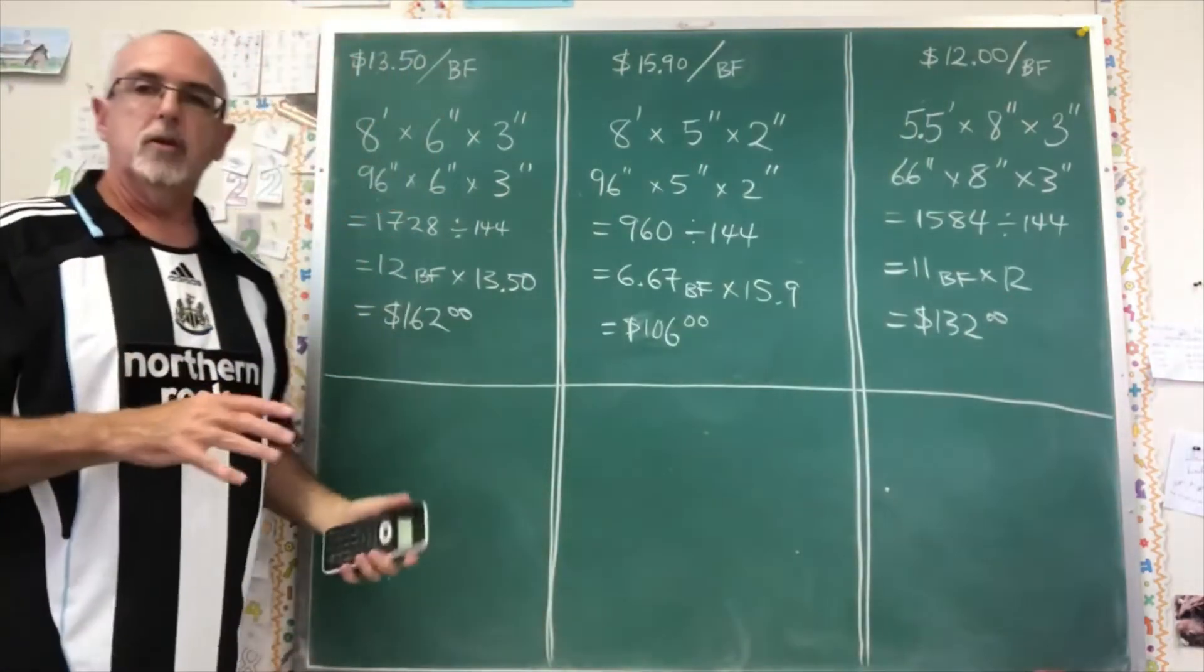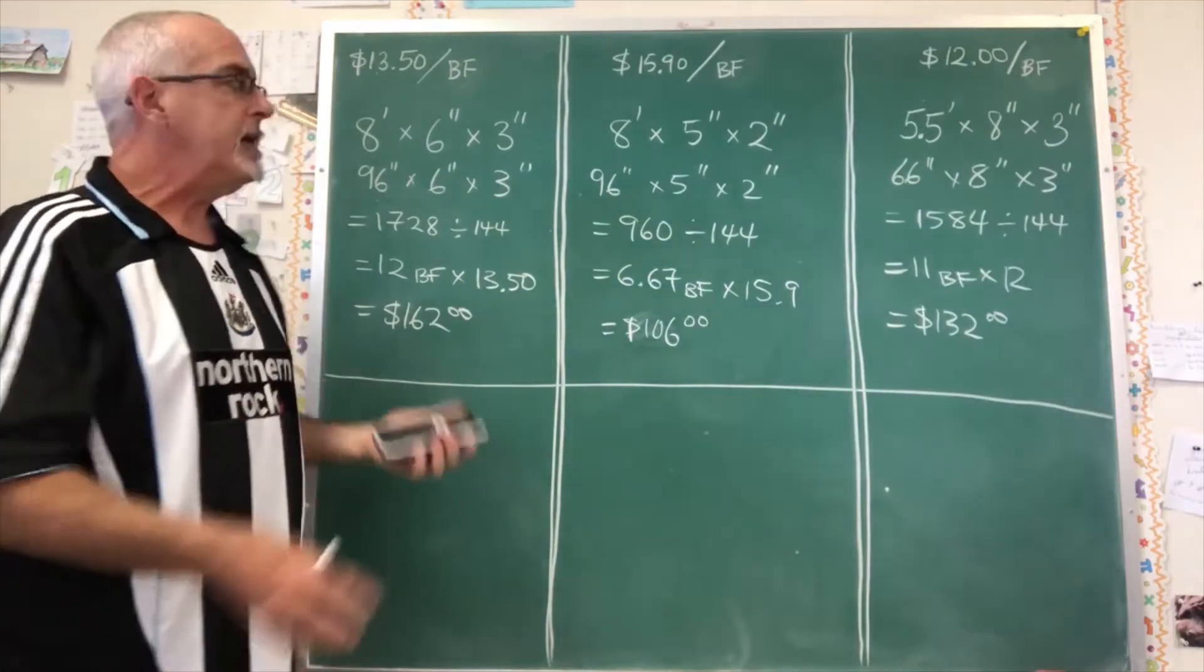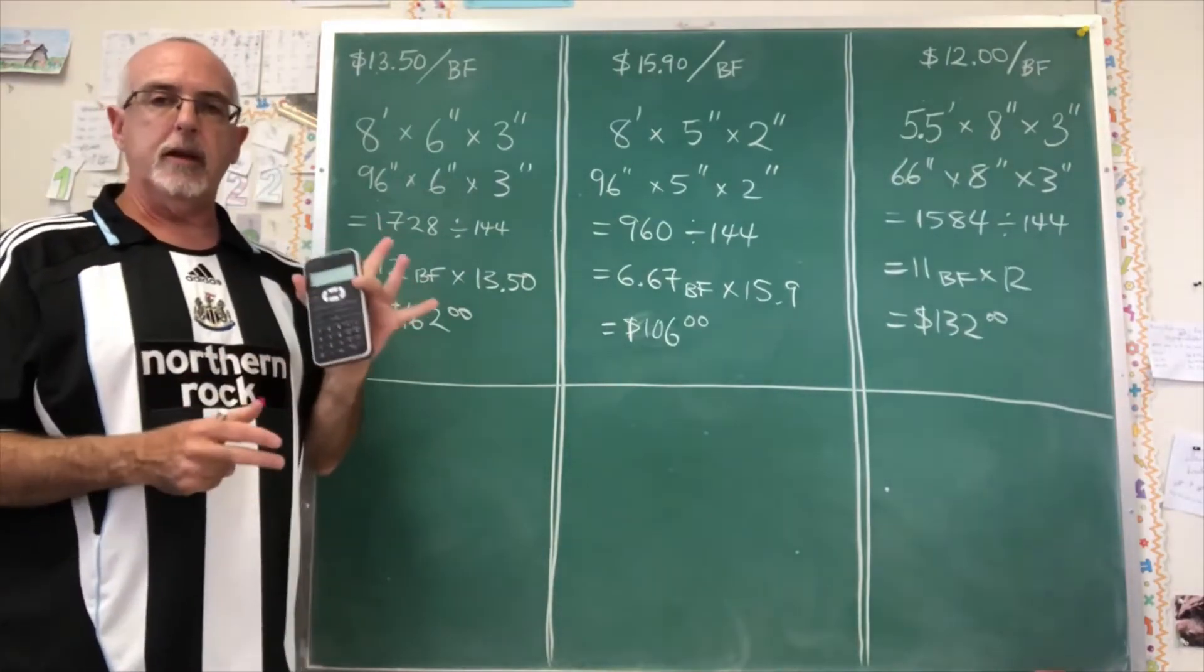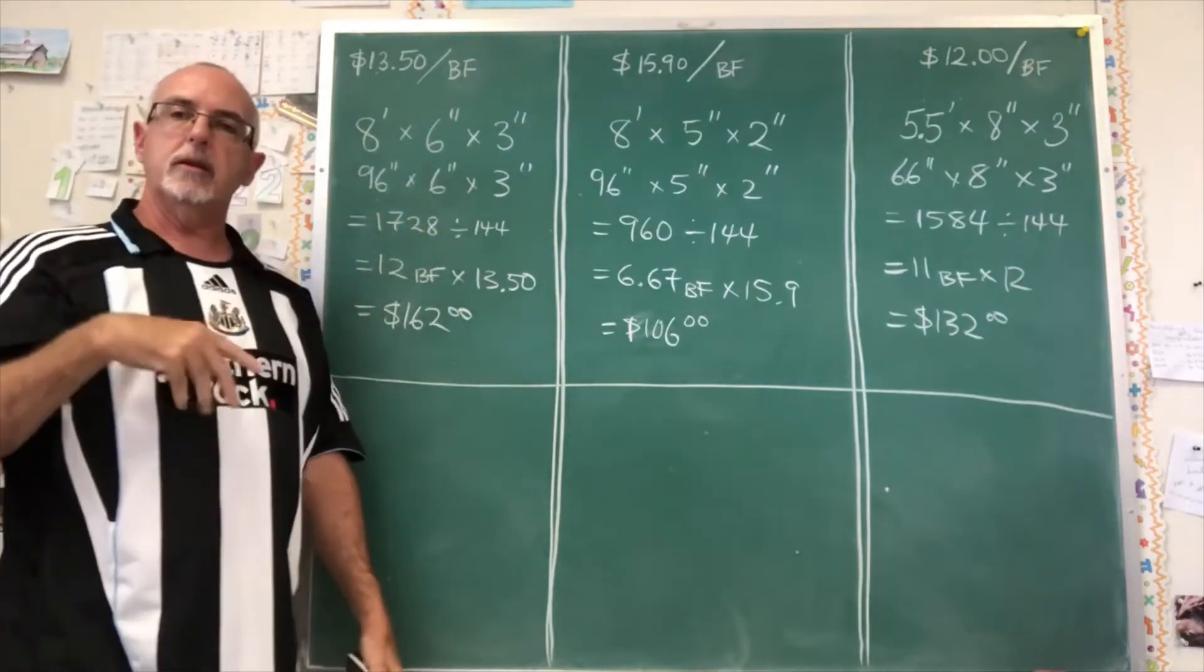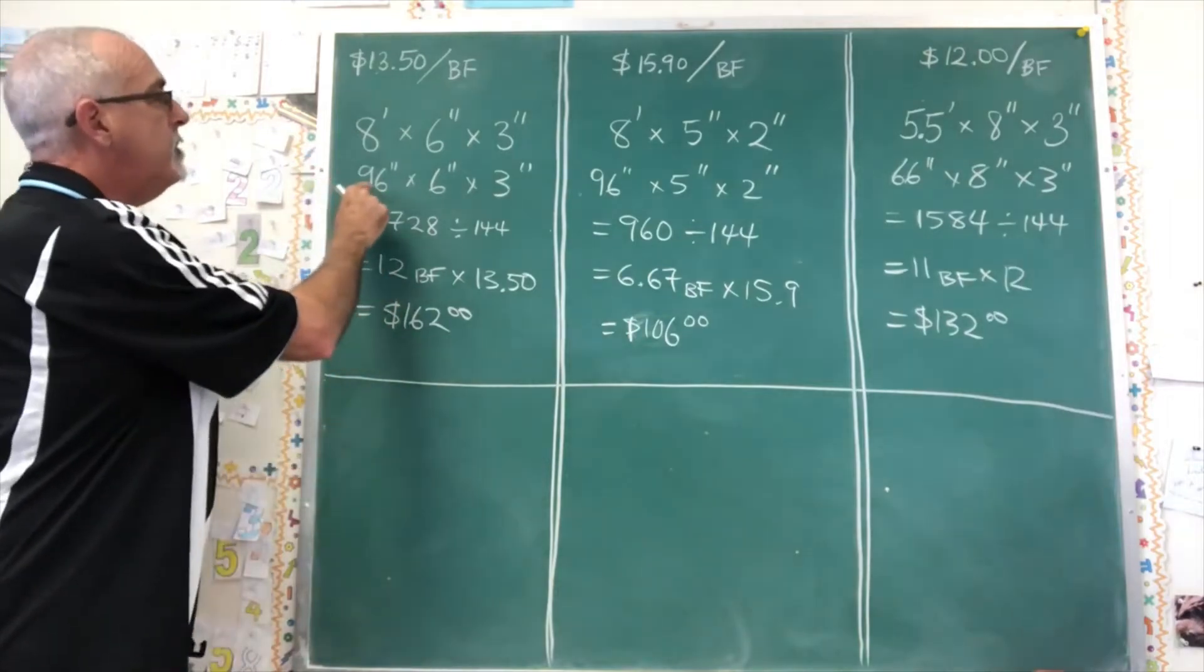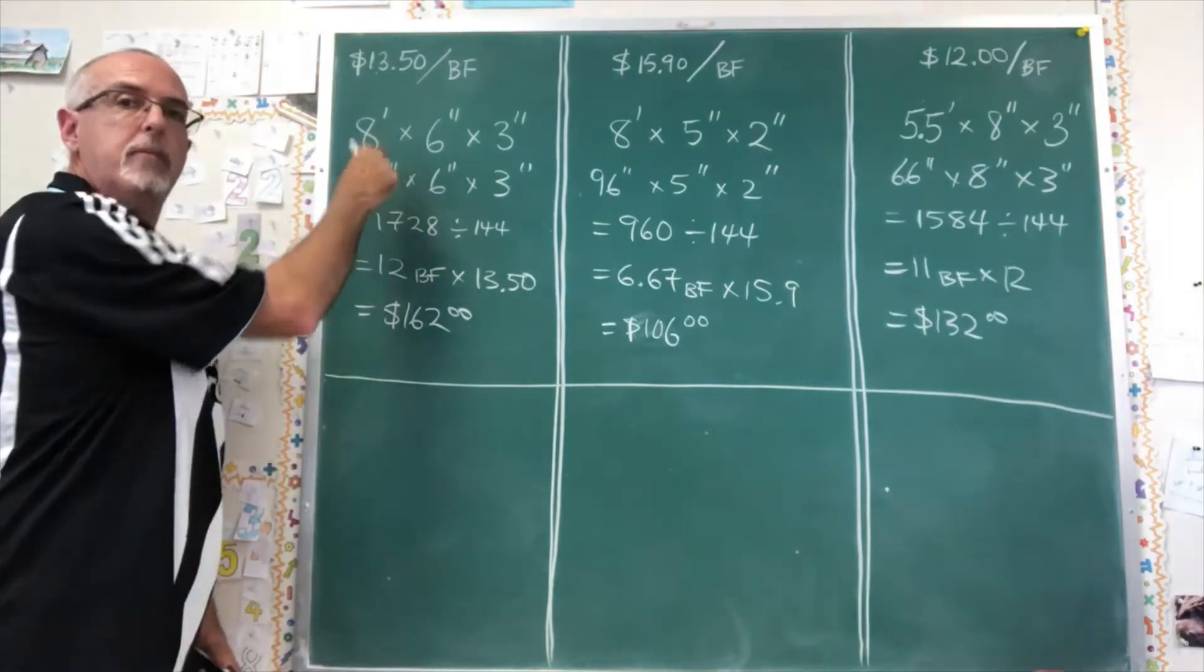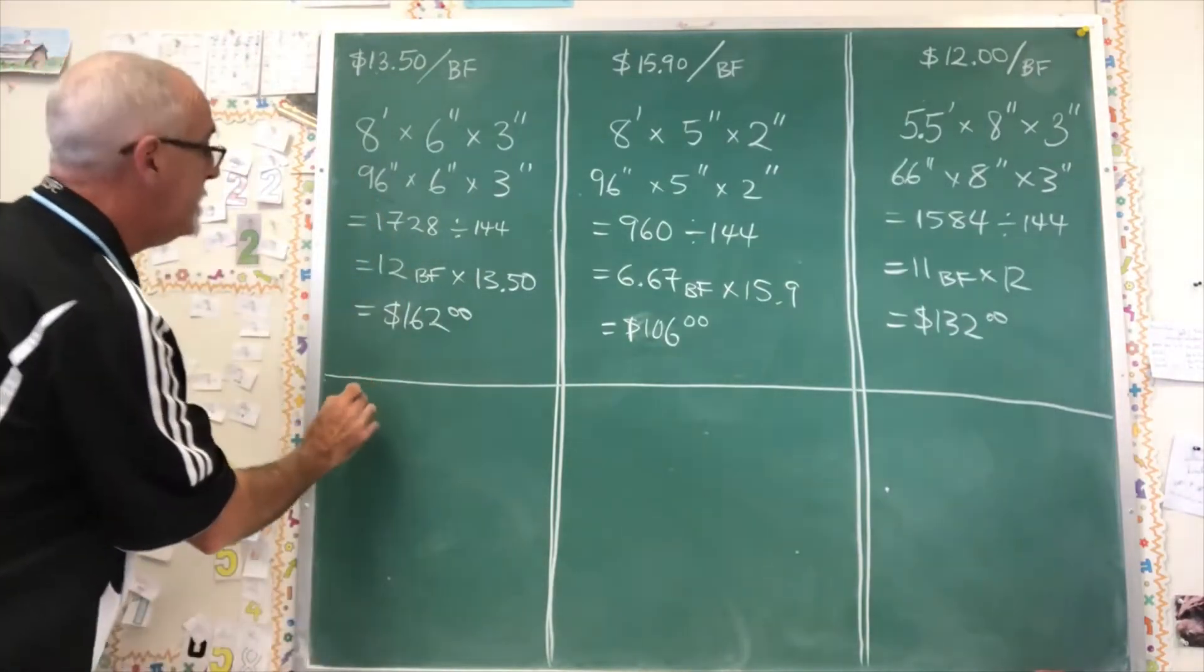Doing this when you're in the store so that you can estimate what you're about to buy before going to the cash is useful. If you don't happen to have a calculator with you though, it can be a little tricky to do all of this in your head. And there's one little trick that I like to apply, which is instead of multiplying 8 feet by 12 inches to get 96 inches and get that very large number, I'm just going to keep it as 8.